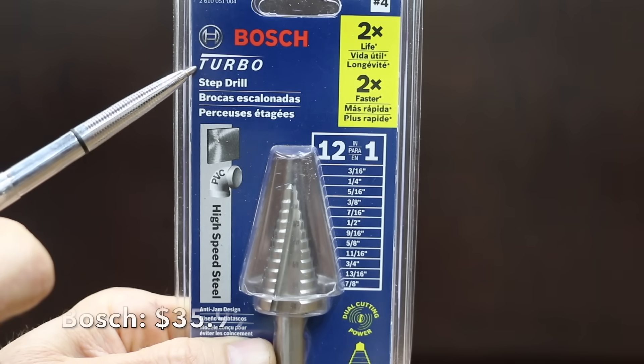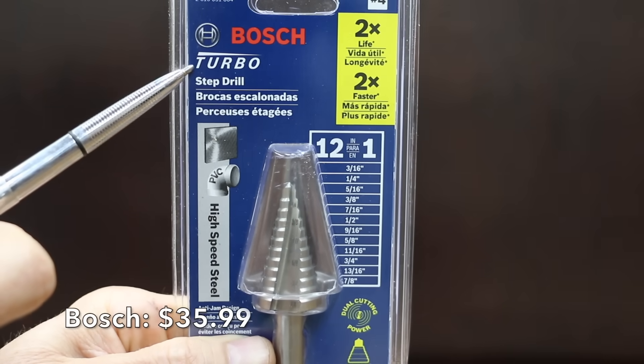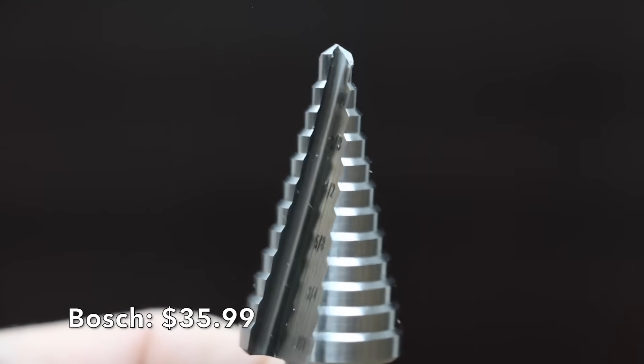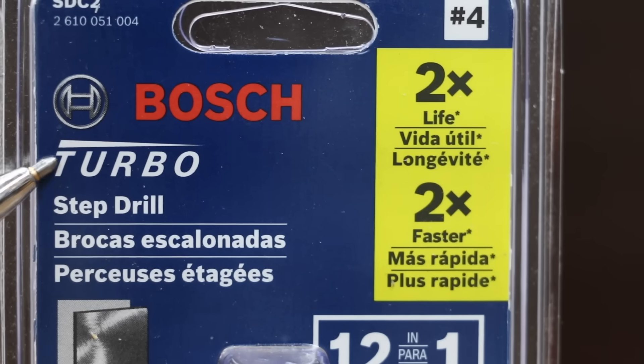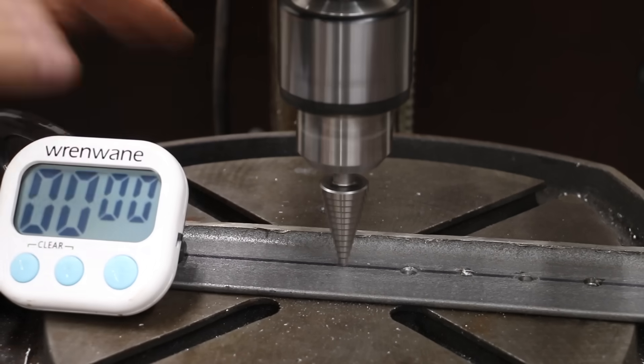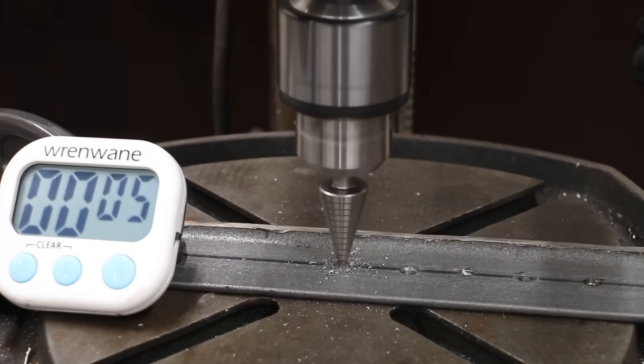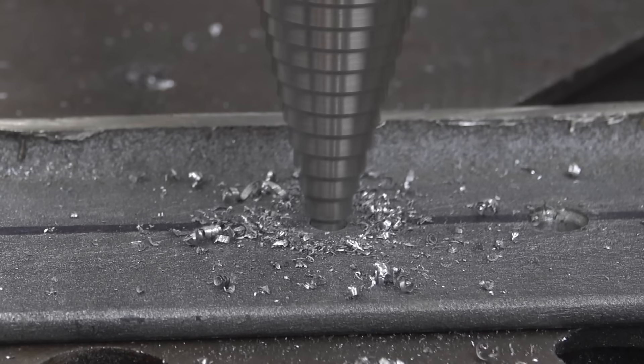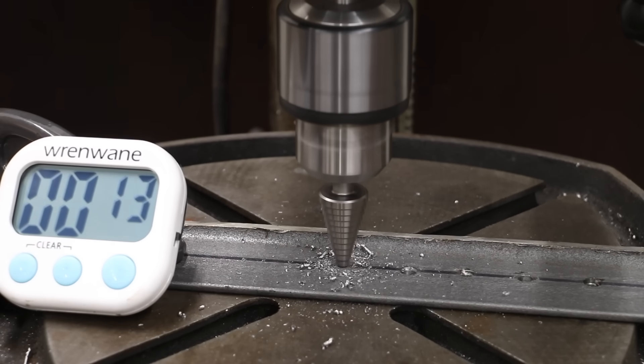Just like the Makita, the Bosch is also made in Switzerland and costs slightly more at $35.99. Unlike the other 12 brands, this one claims to be a turbo step drill, making it two times faster and lasting twice as long. The Bosch turbo did a great job, but wasn't fast enough to beat the Makita or the Teemo. However, 14 seconds is a great time.